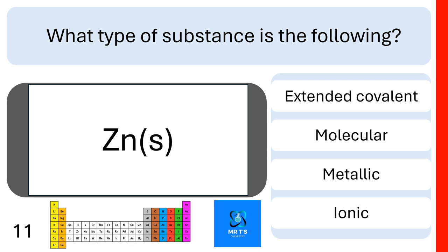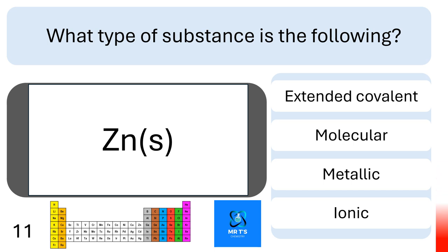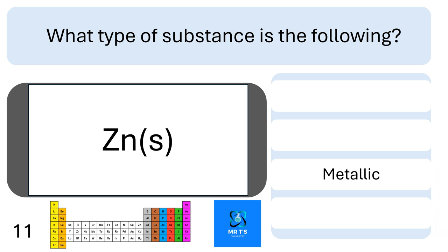Question eleven: what type of substance is zinc solid? Is it extended covalent, molecular, metallic, or ionic? This is a metal, so it's a metallic solid.